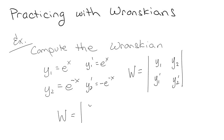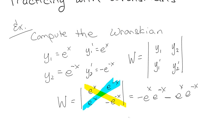y2 prime is negative e to the negative x. So whenever I plug these in, so multiply, minus multiply, and I end up with this minus this. Now because I can math, I know that that's minus 1, minus 1, minus 2. Yay!